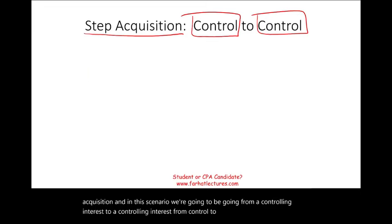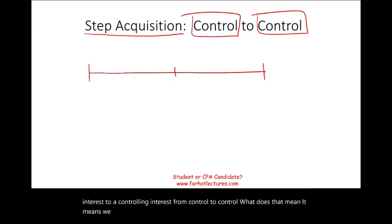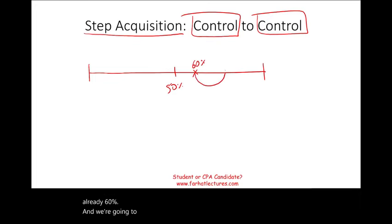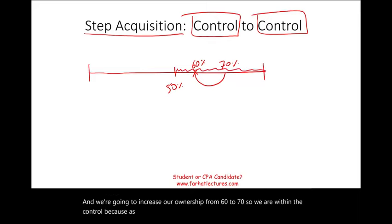What does that mean? It means we already own more than 50% of the company. For example, we already own 60%, and we're going to increase our ownership from 60% to 70%. So we are within control, because as soon as you own more than 50%, you have control.